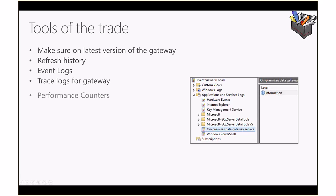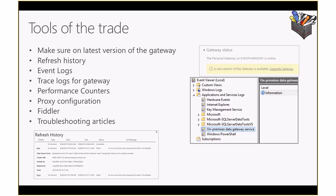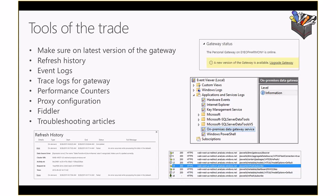Always make sure you're on the latest version of the gateway — the GUI configurator now shows the version number and will notify you of updates. You can check refresh history for scheduled refresh. Event logs are available for both the personal gateway and the on-premises data gateway, and trace logs are available for the gateway as well.